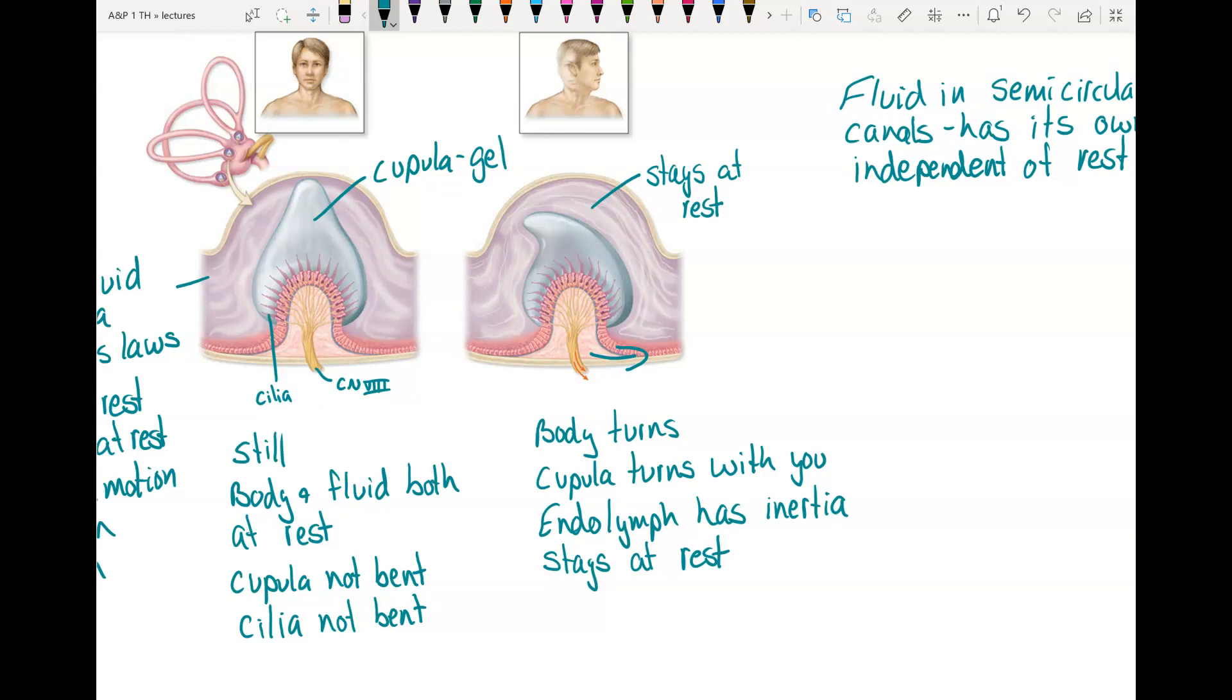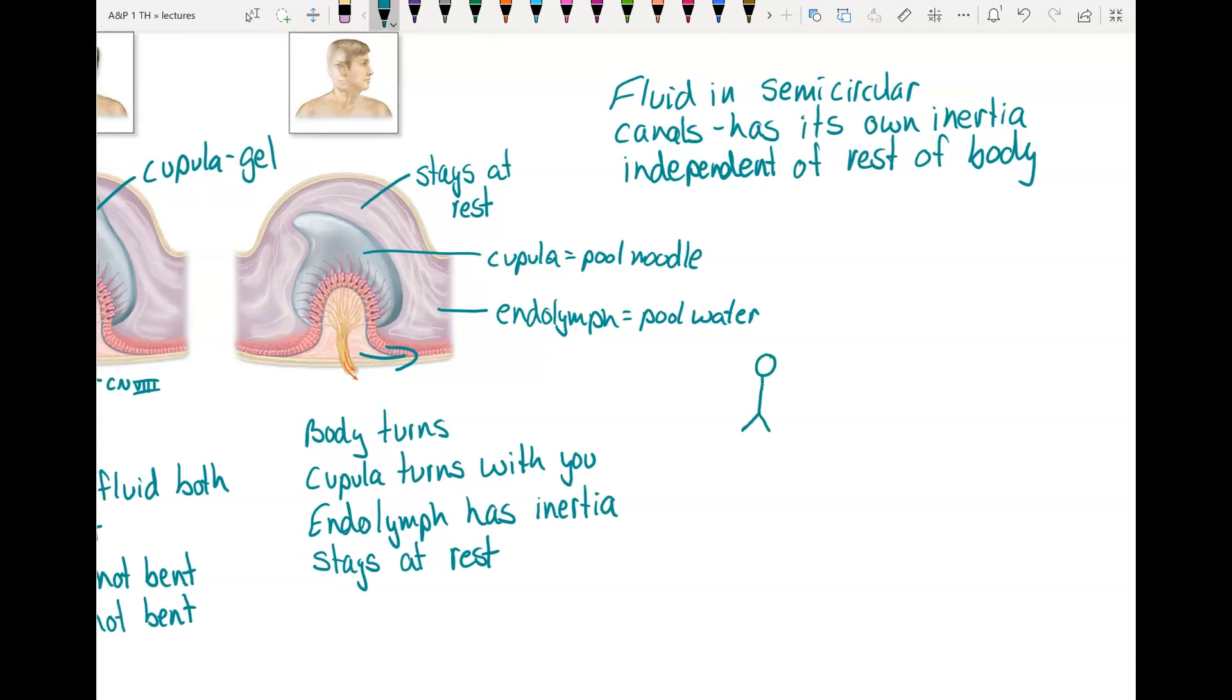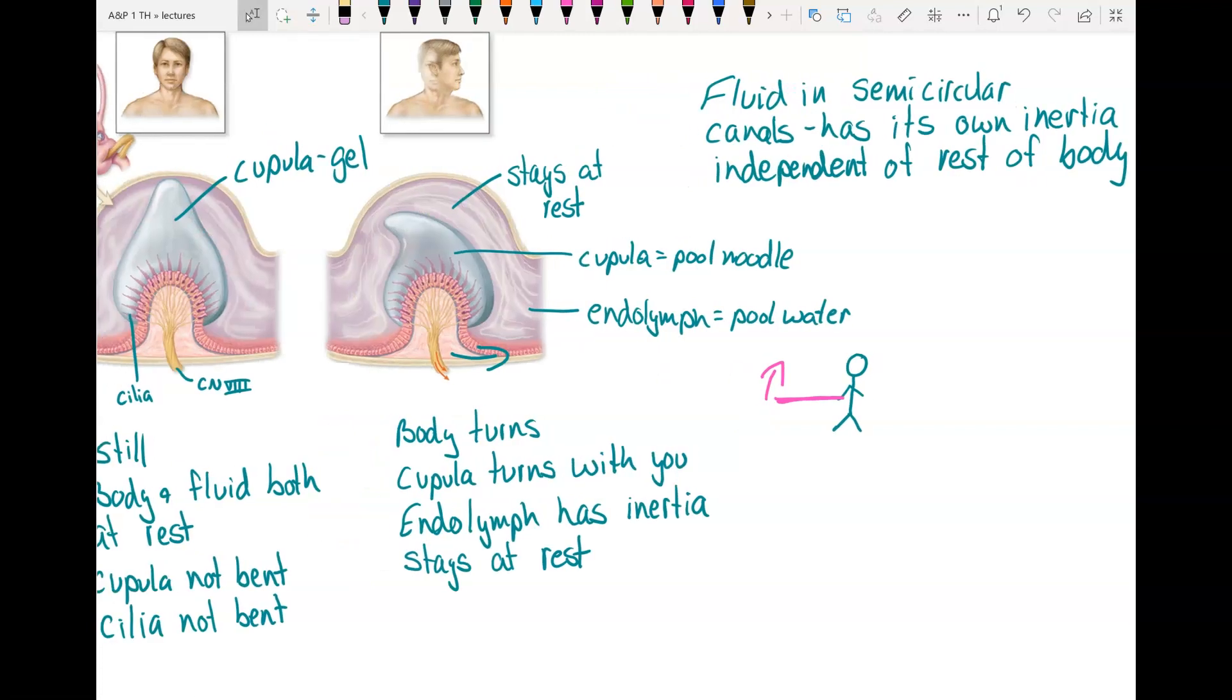Think of being in a round swimming pool with a pool noodle. The pool noodle represents the cupula. And the endolymph represents the pool water. If you hold this noodle out to the side and you start walking laps around the swimming pool, that noodle is going to bend backwards because you are moving, but the water is not.